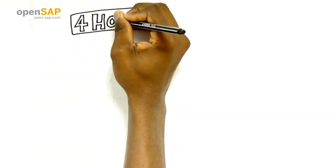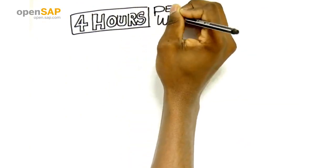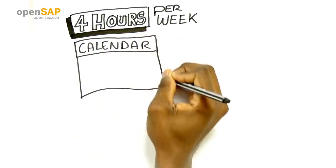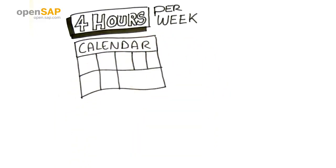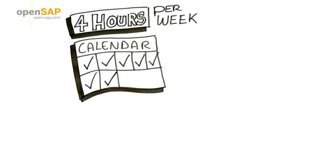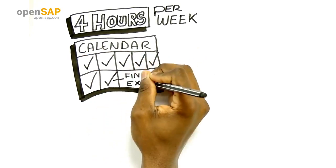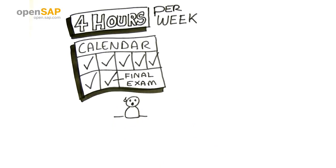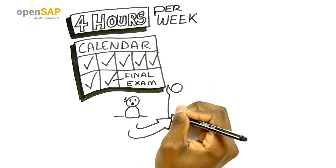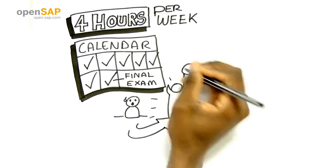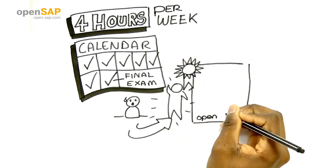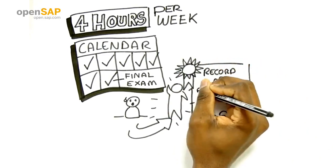On average you will need to find about four hours learning time per week to complete the video lectures and a weekly assignment. After having successfully completed the first six weeks, you'll have one further week to prepare and participate in the final exam. Everyone who completes the course and passes the final exam will be issued a record of achievement. It confirms the successful completion of the course.